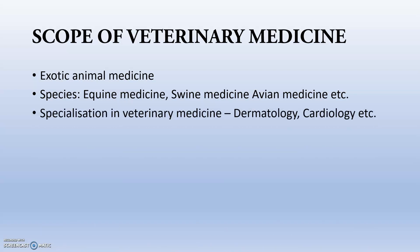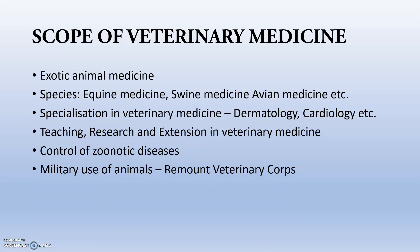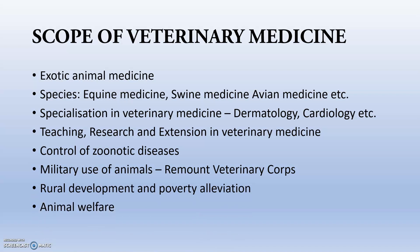Specialization in veterinary medicine includes dermatology and cardiology, especially given the growth of the pet animal sector. Other areas include teaching, research and extension, and control of zoonotic diseases — a very important sector with much more potential in coming years. Additional areas include military use of animals (RVC), rural development and poverty alleviation through farming and animal husbandry, and animal welfare.